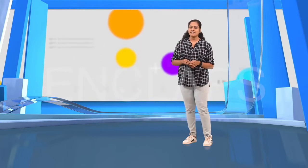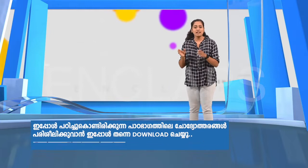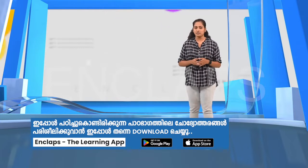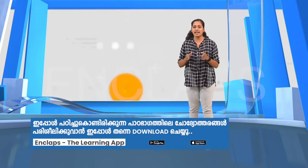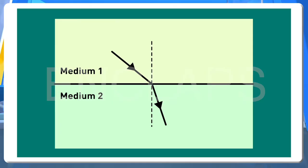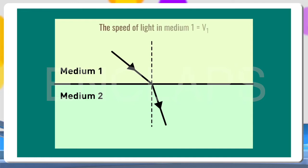So, from this, we can understand that the refractive index of the medium with respect to another medium can be found out by taking the ratio of velocities of light in those media. Now, let's generalize this concept. In this picture, you can see two media and their interface.